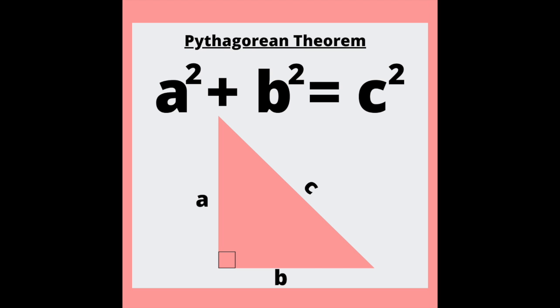a squared plus b squared equals c squared. a squared plus b squared equals c squared.